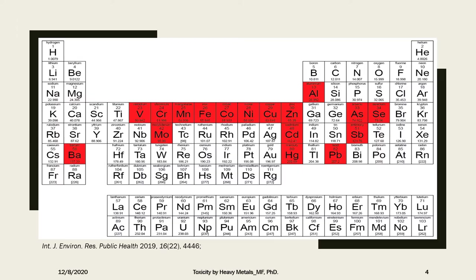If you look at the periodic table, these are the metals known in nature. The highlighted ones in red are what are considered as heavy metals. For the sake of this lecture, we will be talking about these elements: arsenic, lead, mercury, and iron.